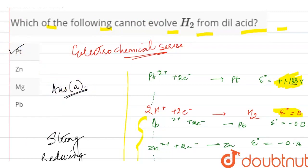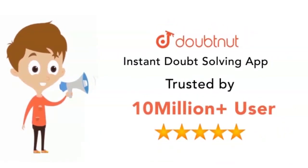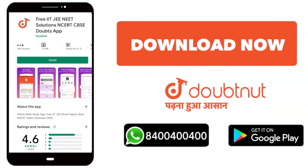Thank you. For classes 6 to 12, NEET, IIT, JEE Mains and Advanced level, trusted by 10 million students. Download Doubtnut app or WhatsApp your doubts at 8404-040-404.